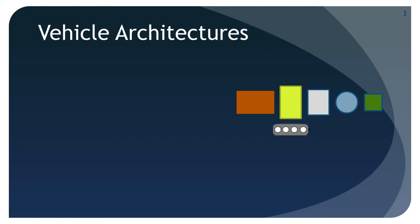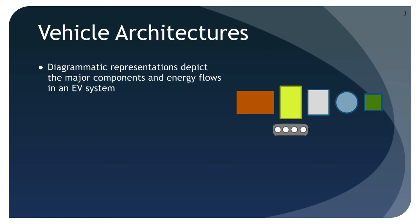In this EV architecture mini course, we'll present a set of simple guidelines and architectural models for each EV variant. The diagrammatic representations depict the major components and energy flows in an EV. It's important to recognize that each major component is a subsystem composed of a variety of smaller components. Each of the major architectural components is represented in a signature color.